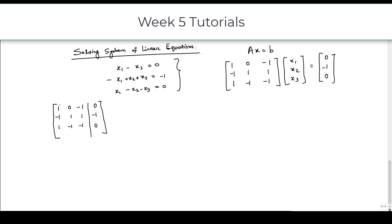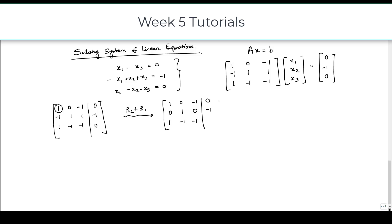The first pivot element is 1, which is in the first column and first row. First, we make the element in the second row and first column to be 0 by doing R2 plus R1. The first row remains unchanged, and the second row becomes 0, 1, 0, minus 1. The third row remains unchanged.